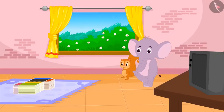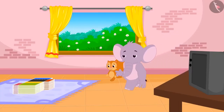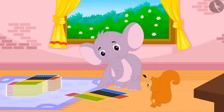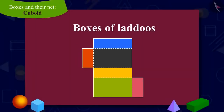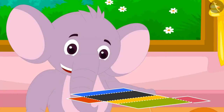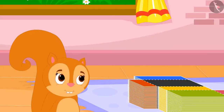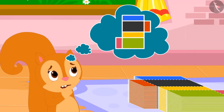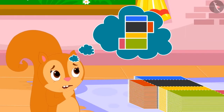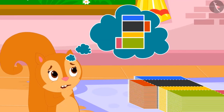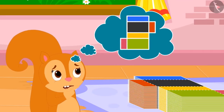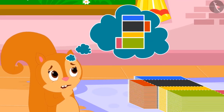Now Appu went with her to the other room. He showed Chanda the cardboard cutouts and said, here are the empty boxes of laddus. Chanda was puzzled. She could not understand why Appu was calling those cardboard cutouts as empty boxes.